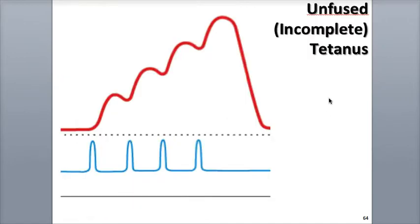In unfused tetanus, a muscle fiber is excited by stimuli occurring 20 to 30 times per second, allowing the fiber to partially, but not completely relax in between the stimuli. This generates a prolonged but unsteady contraction where the individual twitches can be seen in the myogram.